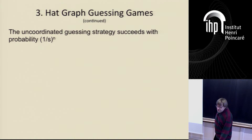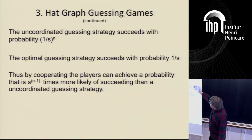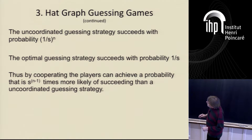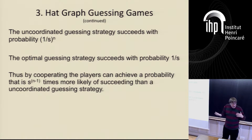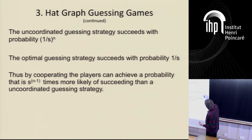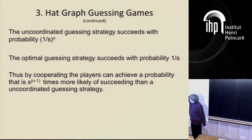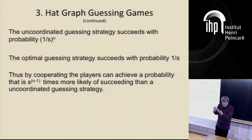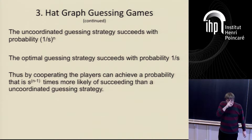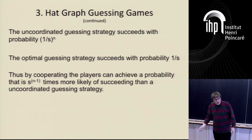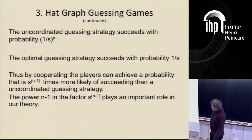This just looks like a recreational problem, but by cooperating they can do remarkably well. I want to introduce this thing called the guessing number. Let's compare what they can actually achieve with what we'd expect naively from uncoordinated random guessing. They can achieve one divided by S, but we would expect one divided by S to the power N. So they're doing S to the 99 times better than expected. That exponent — 99 — is called the guessing number of the graph.